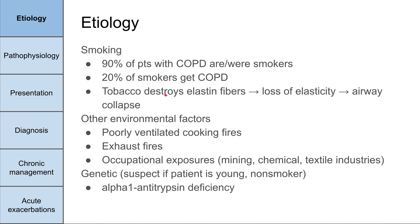A bit of pathophysiology: essentially tobacco destroys the elastin fibers in your lungs. When you breathe, you take a deep breath in using your muscles to expand your chest cavity. But the majority of work in exhalation is actually your elastic lungs and chest wall coming back together like a balloon deflating. That elasticity comes from these elastin fibers, and tobacco destroys those elastin fibers. So you have airway collapse and lungs that are hyperinflated and aren't able to exhale.